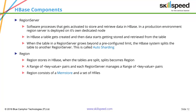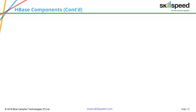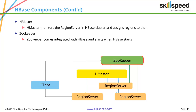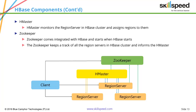Each region server manages a range of key-value pairs. A region consists of a memstore and a set of HFiles — the memstore is the RAM part that stores data in memory, and the HFile is the data persisted to disk. The HMaster component monitors the region servers and assigns regions to them, and is responsible for automatic sharding and assigning new regions. ZooKeeper comes integrated with HBase — you don't need to install it separately. It keeps track of all region servers in the cluster and informs the HMaster; it is essentially a coordination framework.